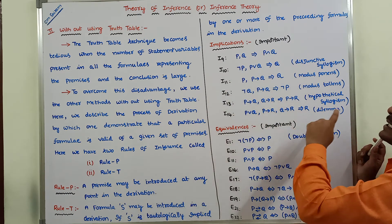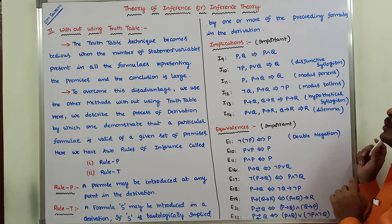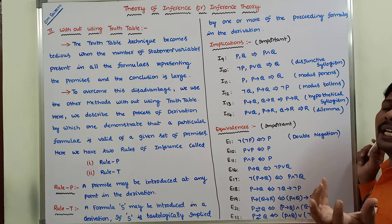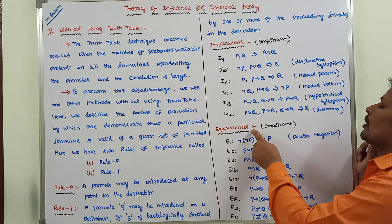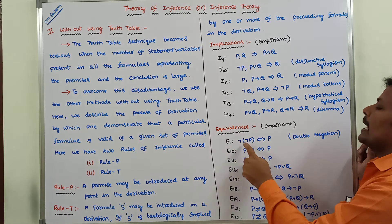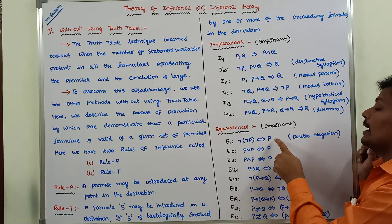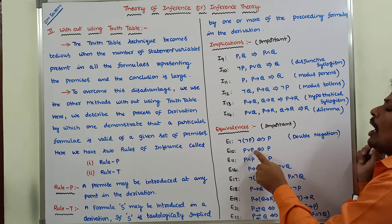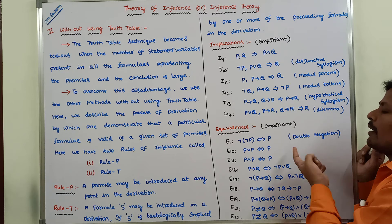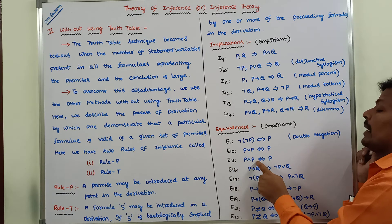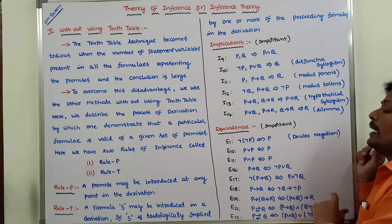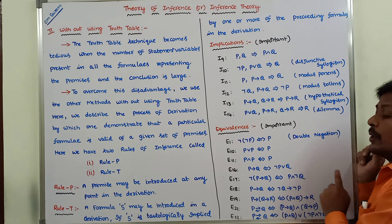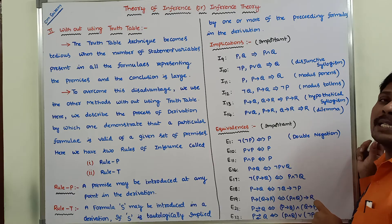These are the first six important implication formulas, used in the derivation for deriving the conclusion from the given set of premises. Now the important equivalence formulas: E1 — negation of negation P is logically equivalent to P, called the Double Negation Law. E10 — P or P is logically equivalent to P. E11 — P and P is logically equivalent to P. E16 — P conditional Q is logically equivalent to negation P or Q. This is the most important equivalence formula.